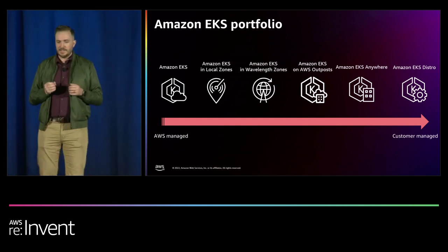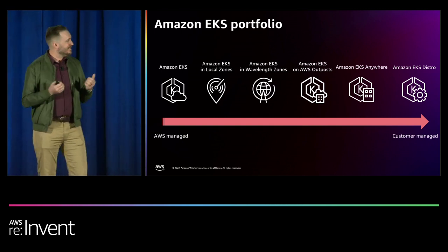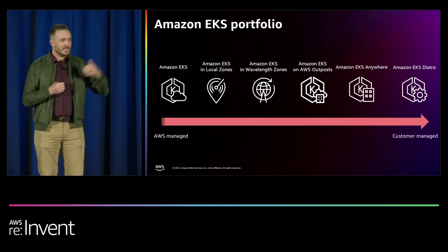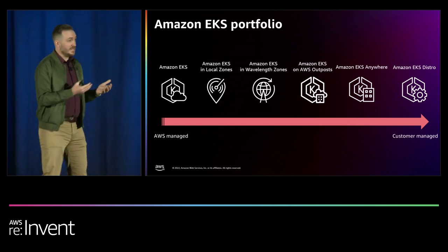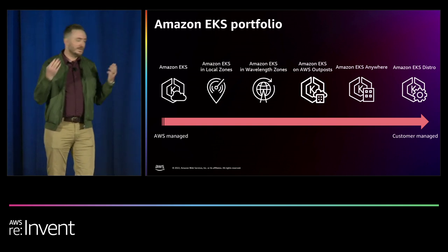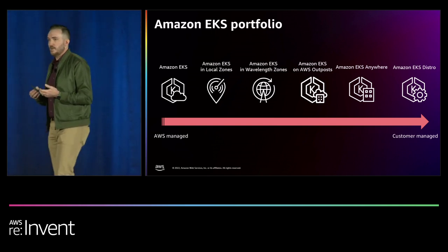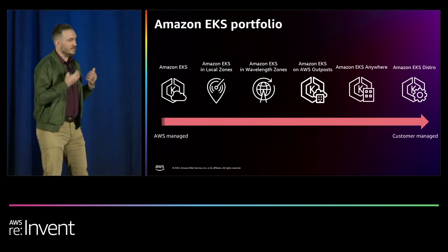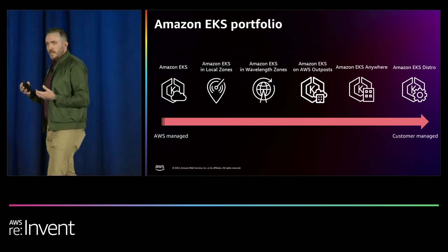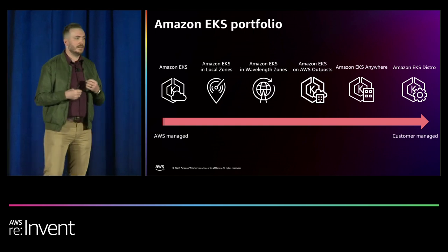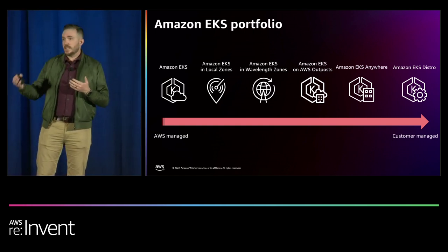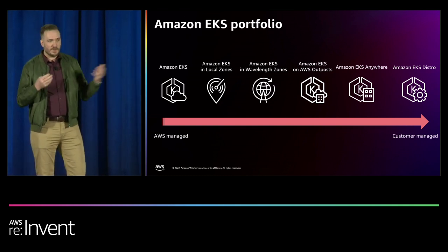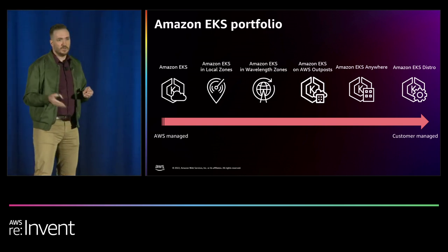There are a lot of EKS products now at Amazon — you can run Kubernetes in a lot of ways. On one side of the spectrum, you can run Kubernetes in a region in a few ways: serverless with EKS Fargate where we handle all the scaling and node management; EKS Managed Node Groups where you have more control on which nodes you pick; or you can just attach your own nodes to EKS and set up your own auto-scaling groups yourself.